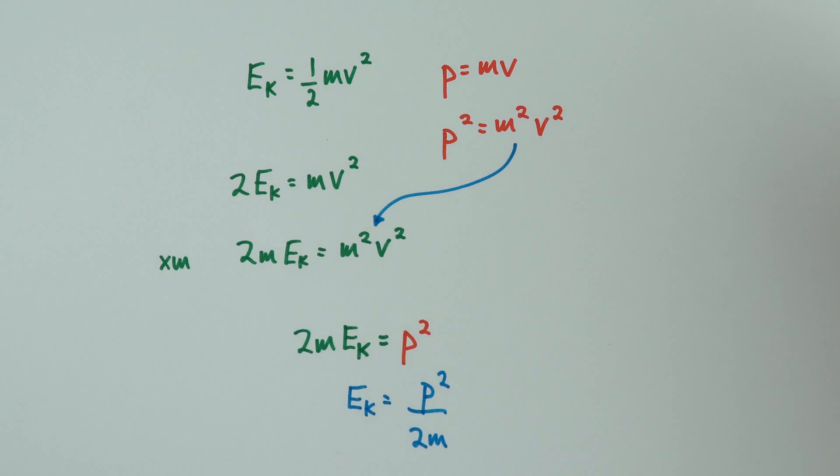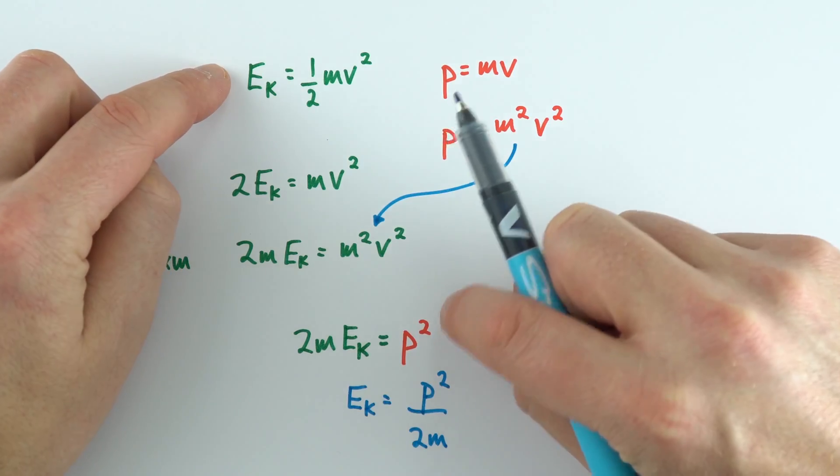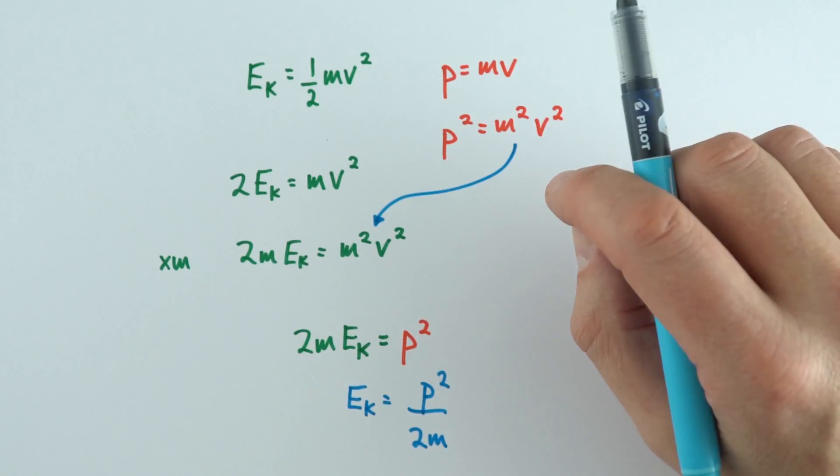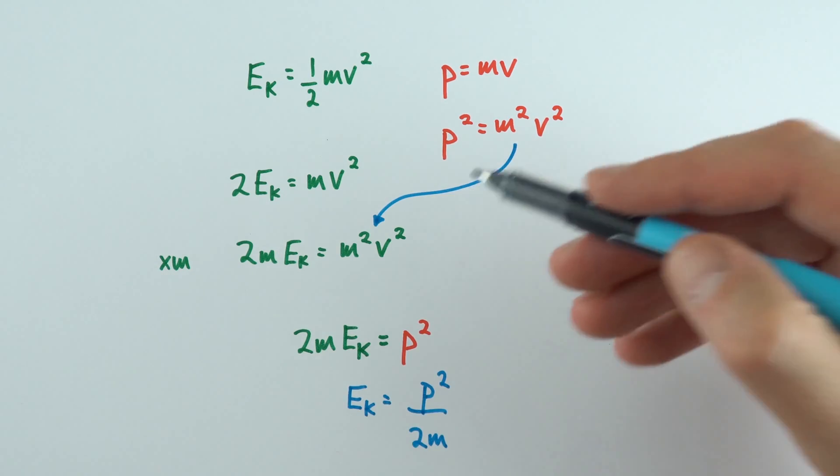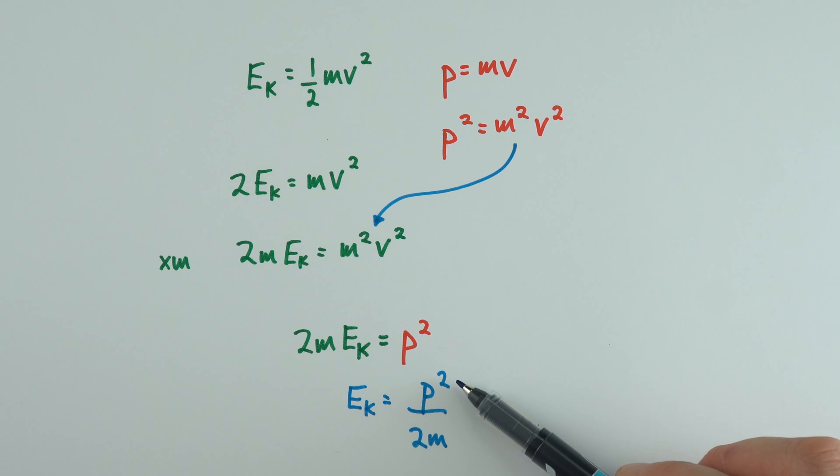Now it doesn't really matter which way you do it. Effectively what we're doing is starting with two different equations and combining them together. I think this is the thing about physics: there's not just one way to get to the right answer. As long as you are consistently applying the same rules, you can get to the same end point through a variety of different methods. So the kinetic energy is equal to the momentum squared divided by 2m.